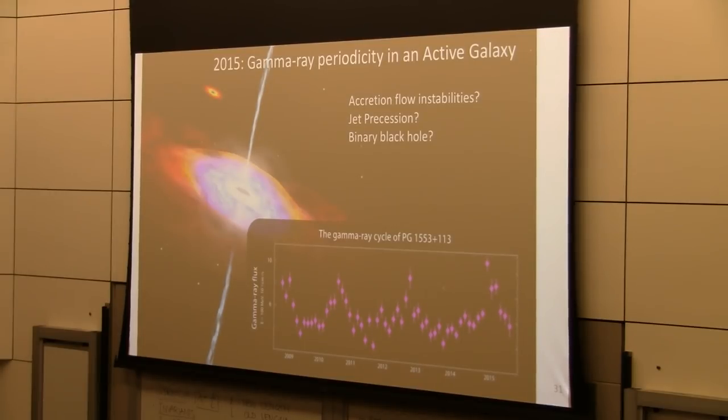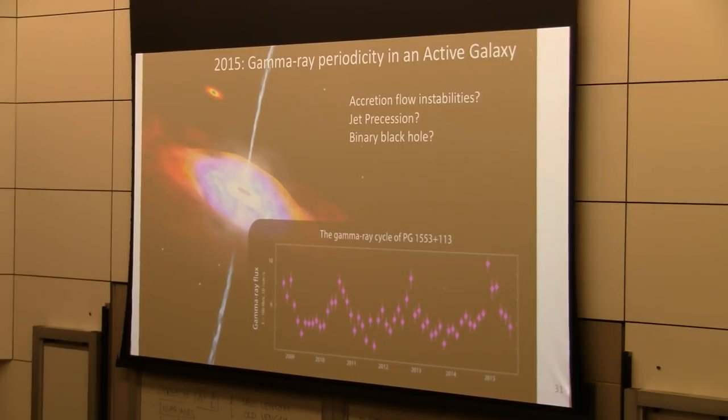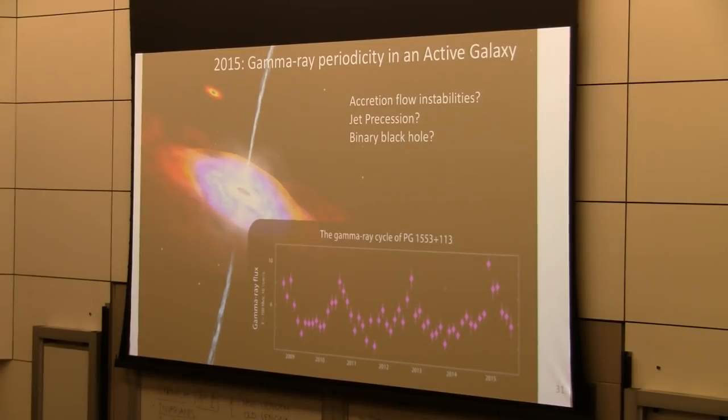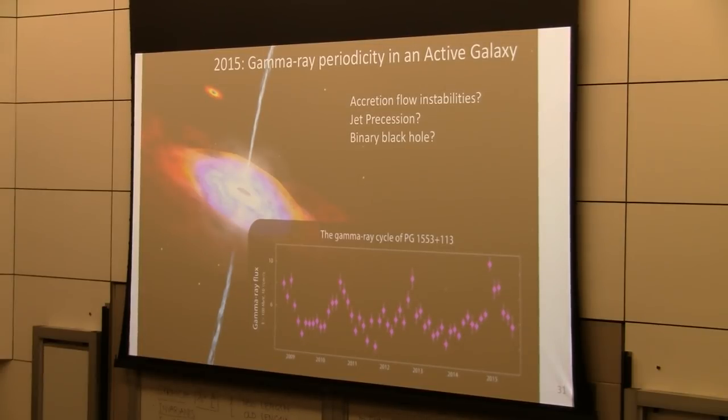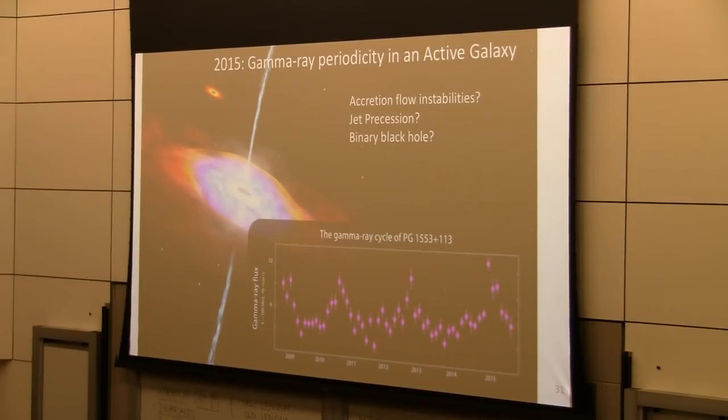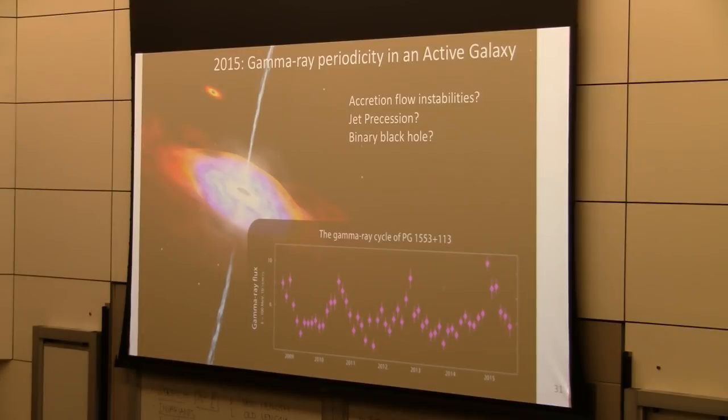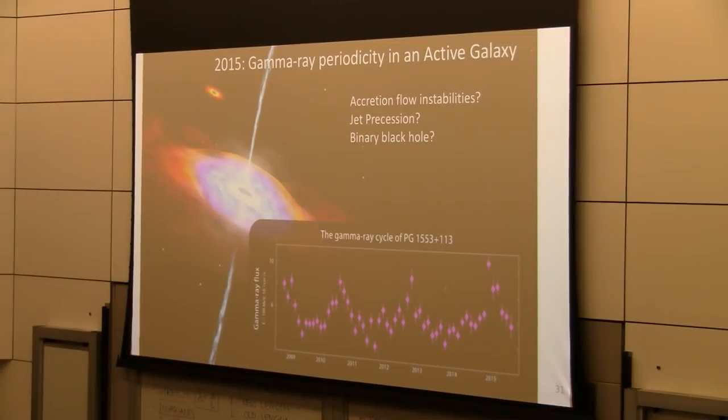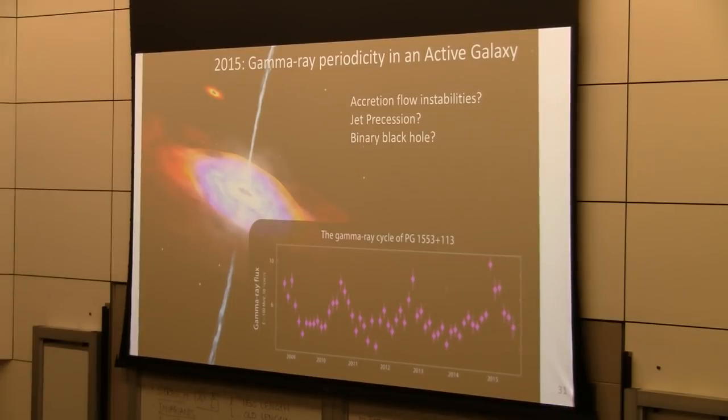As the mission continues for more and more years, we now open up the possibility to see things on timescales that were unattainable to us. One of the things that we've been following is the light curve of this object, PG 1553. It appears to show a periodicity or episodic emission on a timescale of about 2.2 years. This is not yet statistically significant, but it's very suggestive. If we really are seeing some sort of quasi-periodic emission, it might be telling us about magnetically driven accretion flow instabilities or jet precession, or perhaps we're seeing evidence of a binary black hole system.